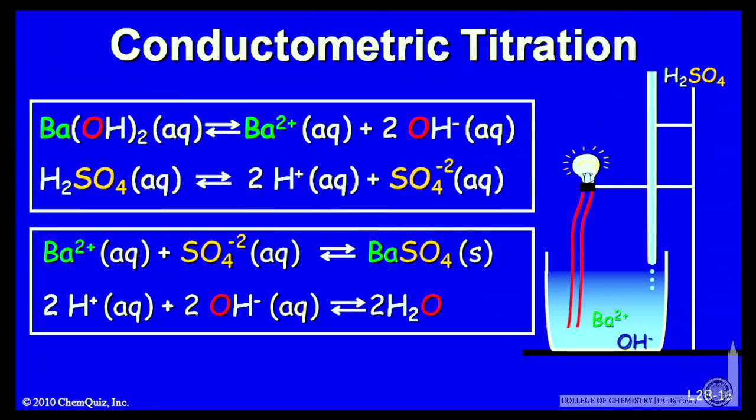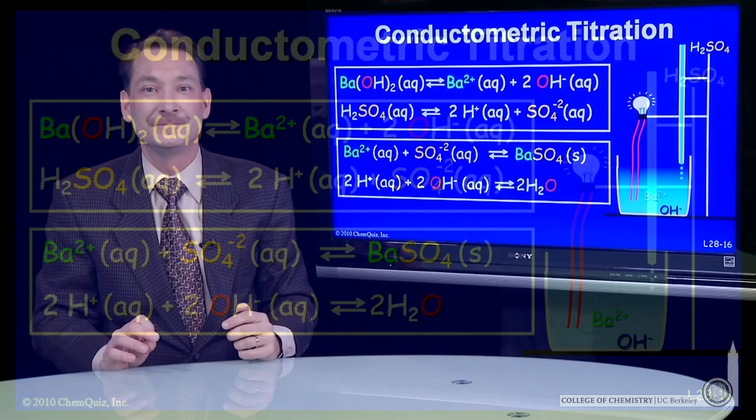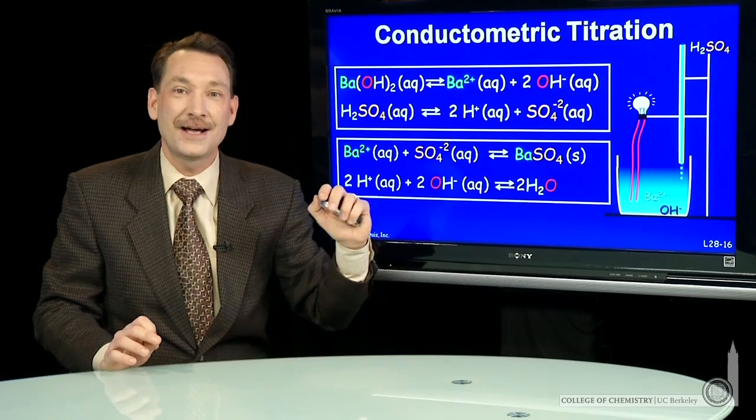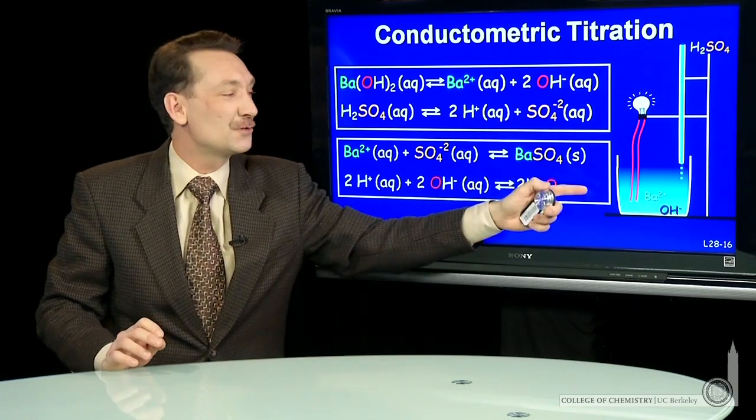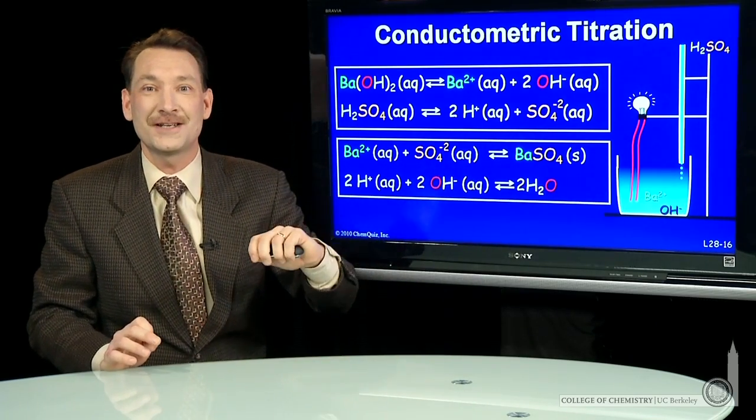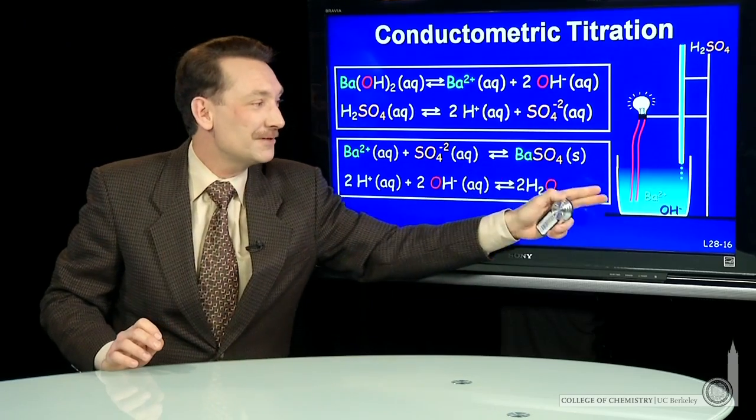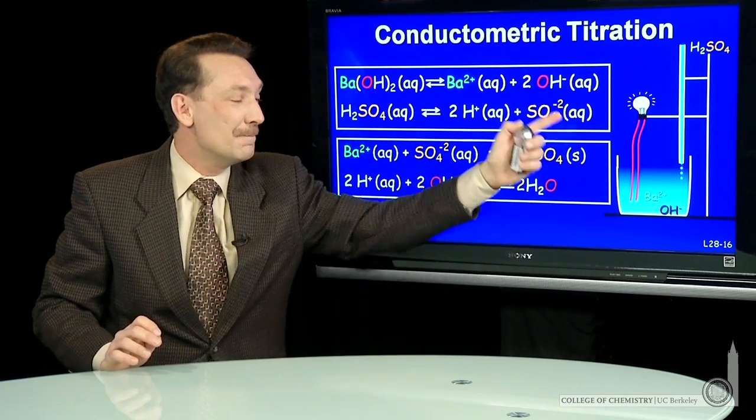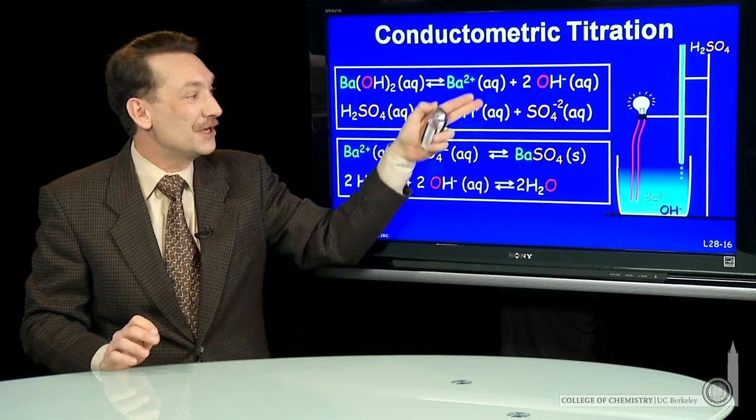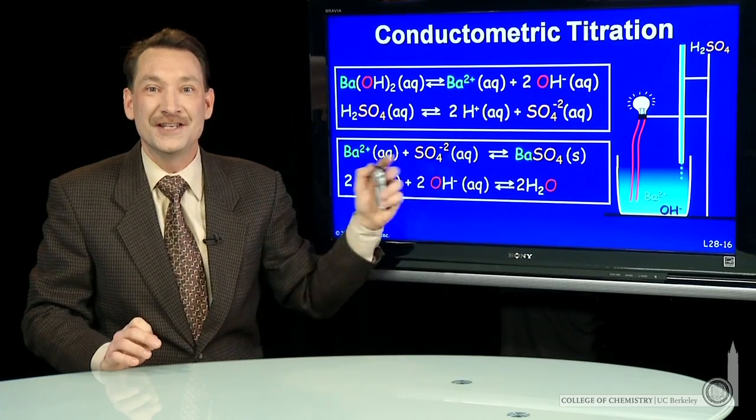So as you add the H2SO4, the concentration of ions drops, and the light would dim. So you can track the concentration of ions using what's called a conductometric titration. A conductometric titration is a way to measure ionic strength, and you can use it to monitor dissolution reactions.